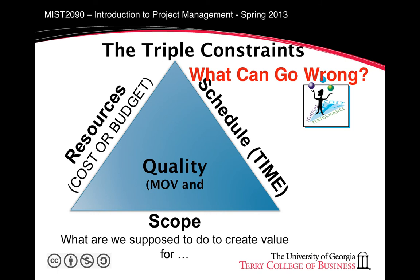Some common risks are related to scope. For example, scope grope — this occurs when a project team has difficulty defining the scope and deciding what the requirements are. Another difficulty related to scope is called scope creep, potentially one of the most common problems. Here we add features or capabilities incrementally that were not part of the original scope. This can be very dangerous to the project's success because new features generally require additional resources and more time.